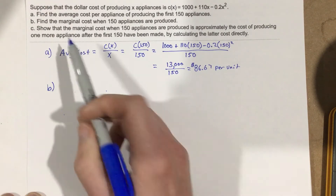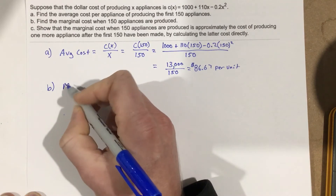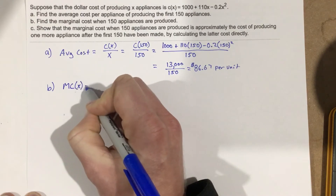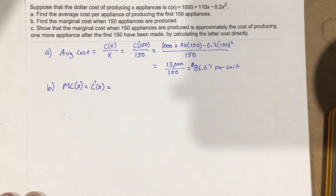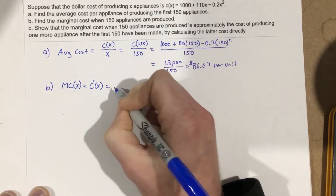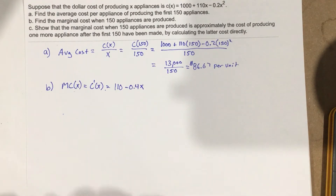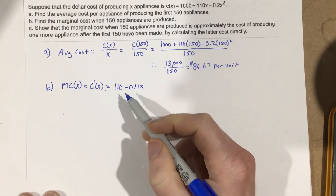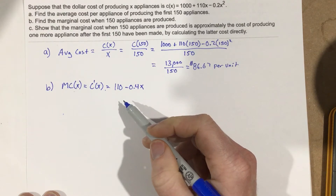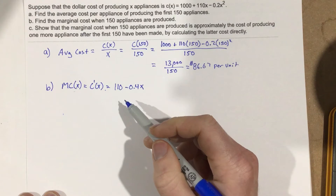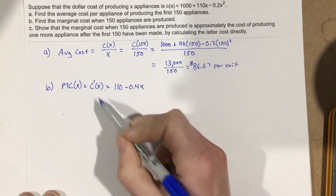We can figure this out by taking the derivative. The definition of our marginal cost: MC(x) equals the derivative of the cost equation. So the derivative of C(x) is 110 minus 0.4x. When we find the slope, we're finding the cost per unit — that is a slope, and that's what we're finding when we take the derivative here.